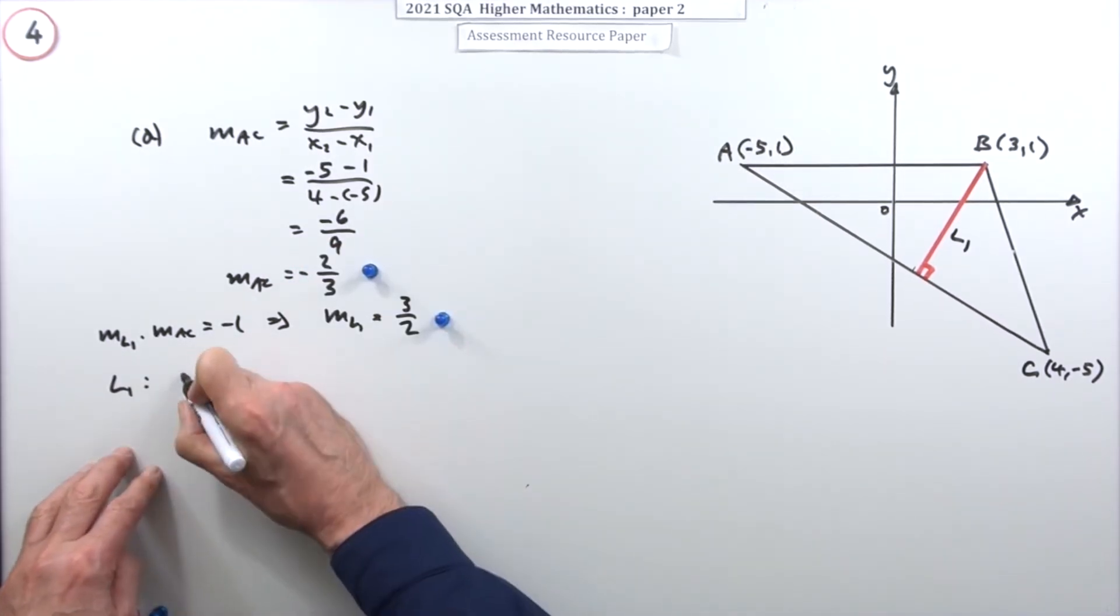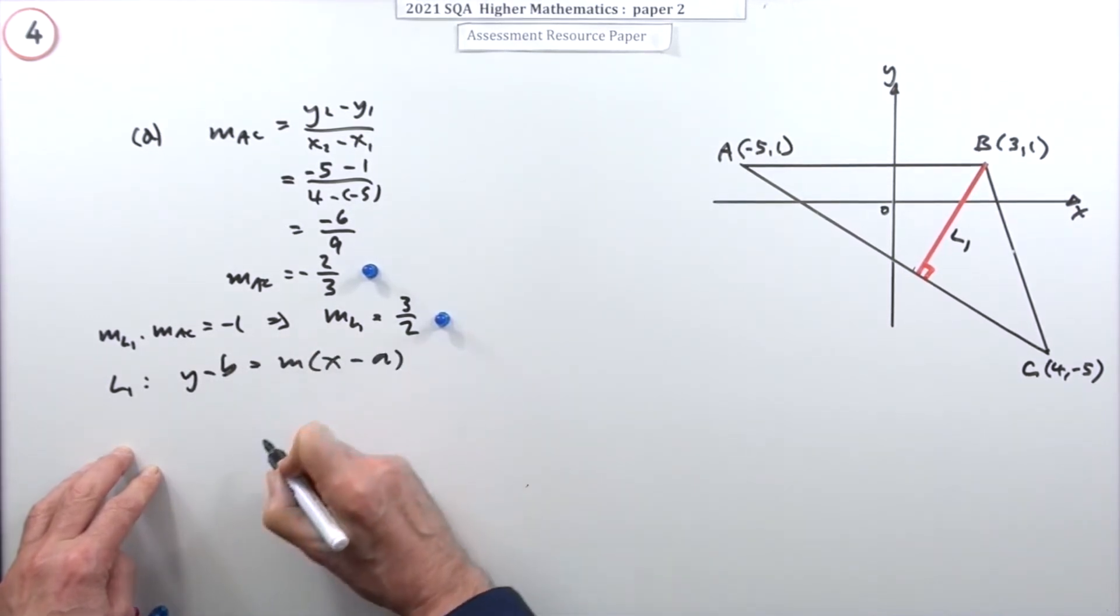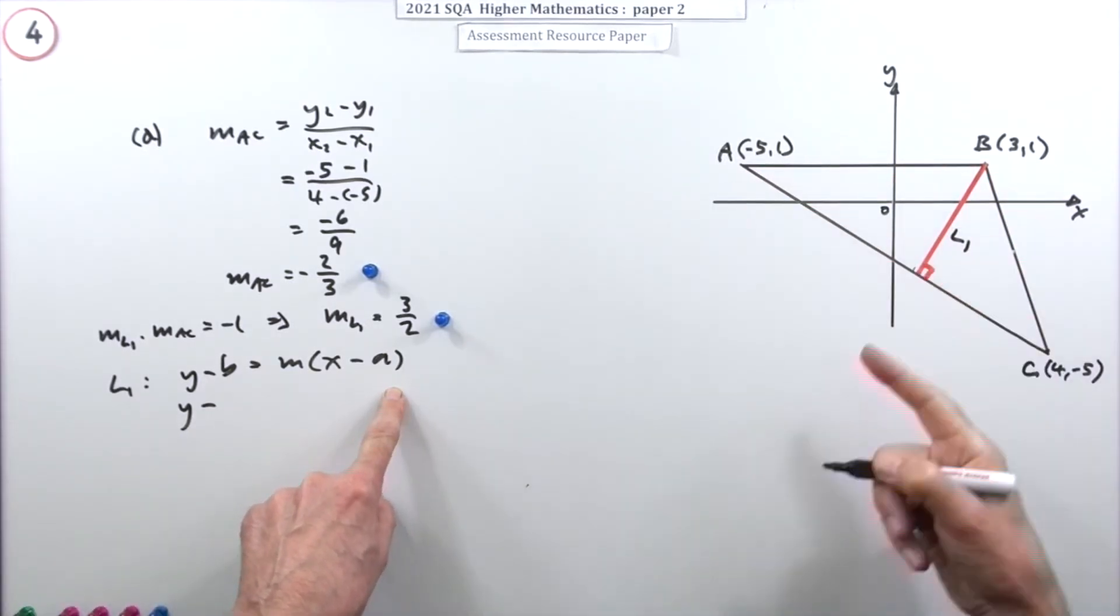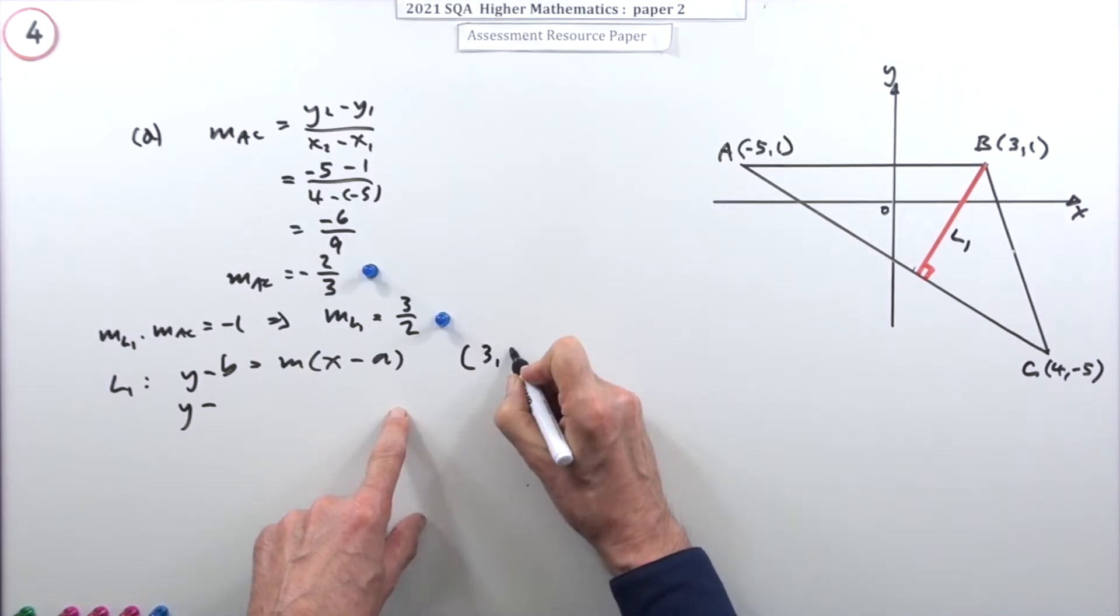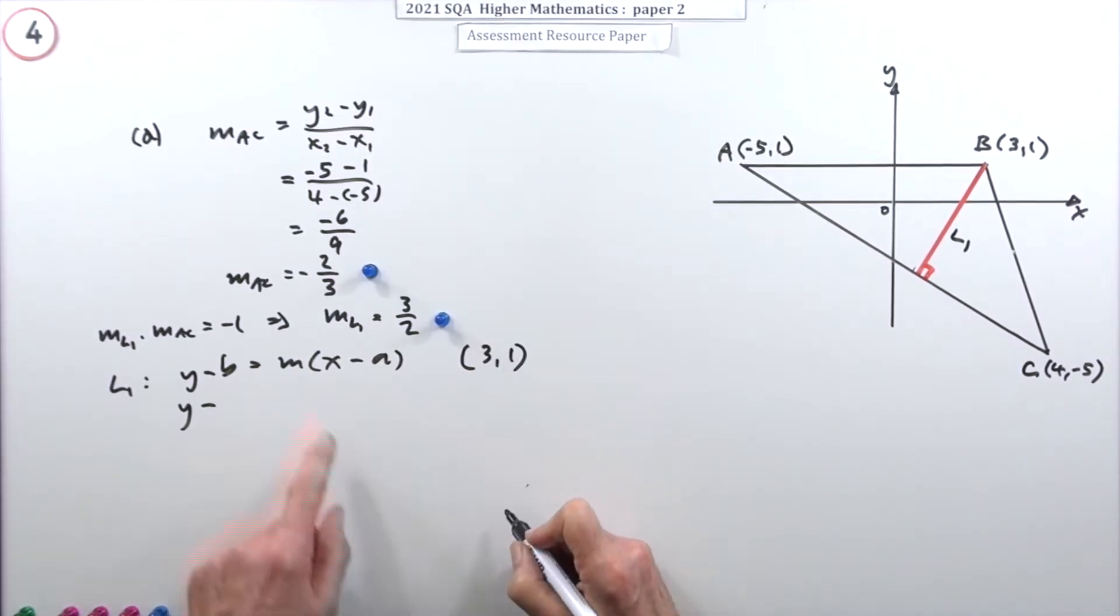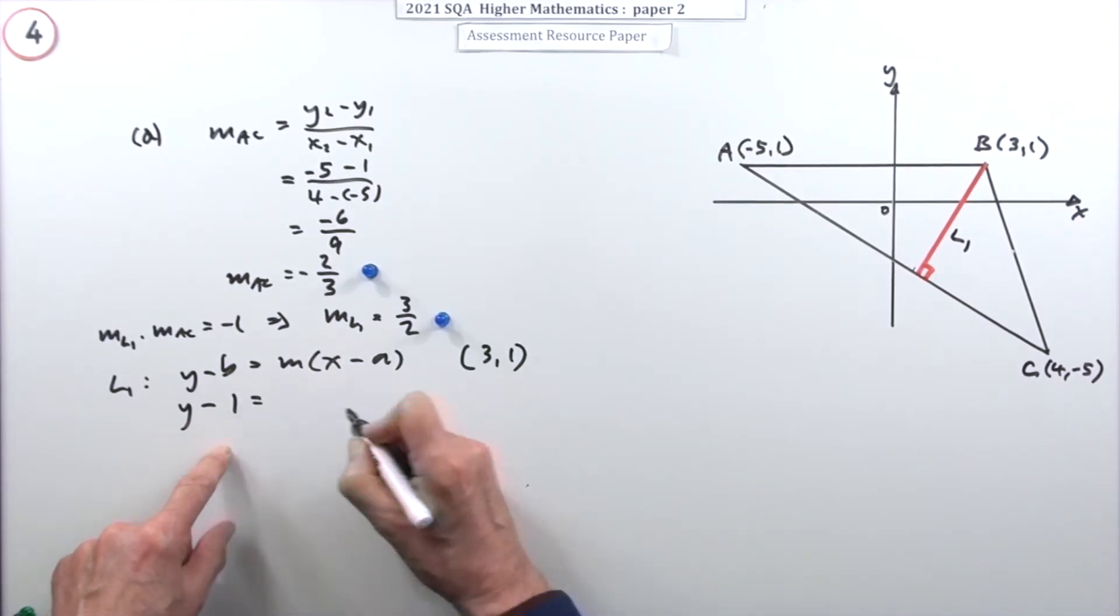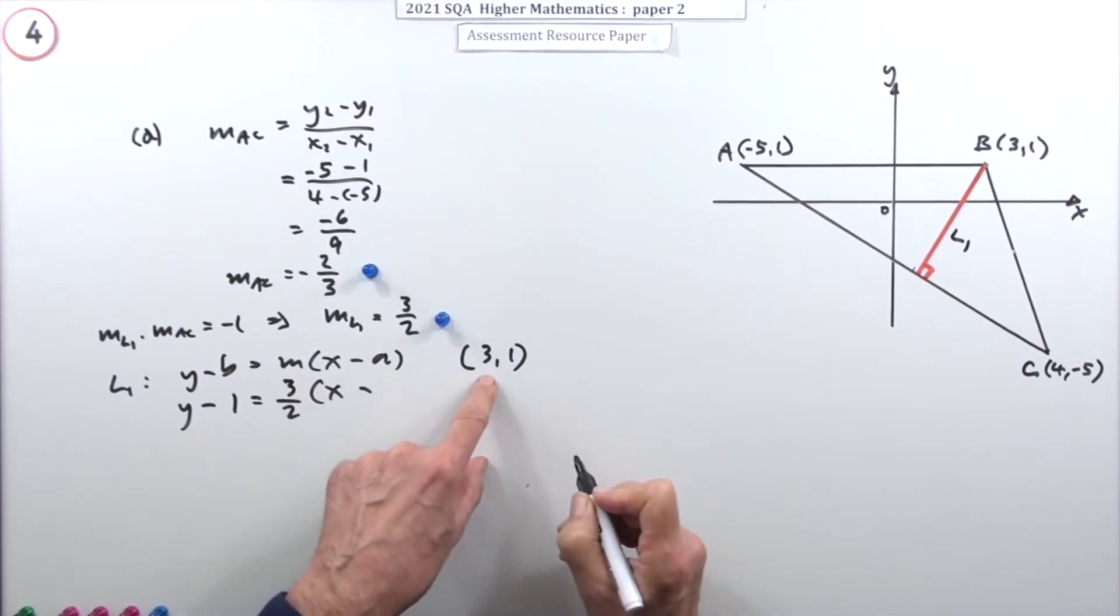Then you can finish it off. What's line 1 then? Well, y minus b would be m(x minus a). Using which point? Because there's three points - make sure you pick the correct one, it's B. So I think I'll put a note there - I'm using (3,1) and I'm using m is 3/2. So y minus the y coordinate is the gradient 3/2 times x minus the x coordinate.